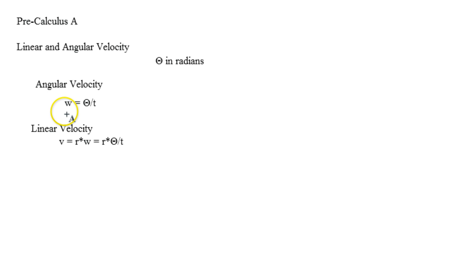So angular velocity, this should actually be lowercase omega, it's like a curly bottom w. But it's going to be omega equals theta divided by t, which is time. So it would be your radians divided by your time. That gives you the angular velocity.